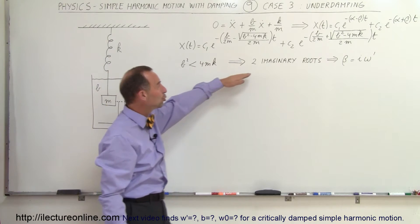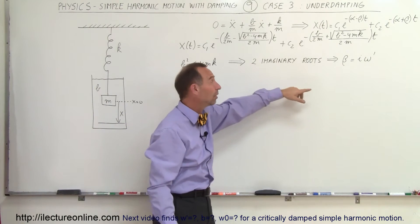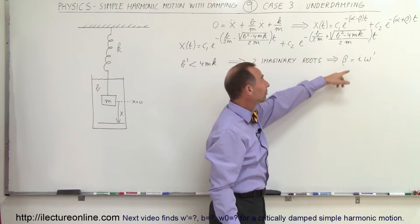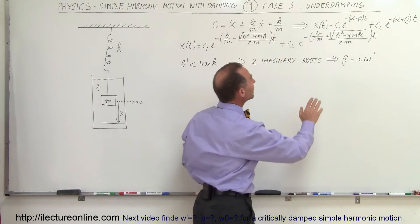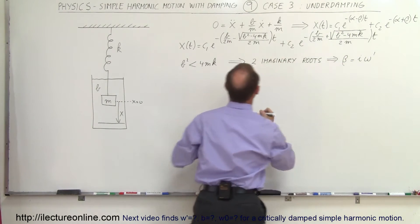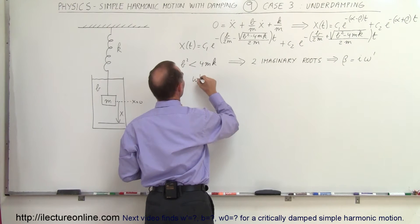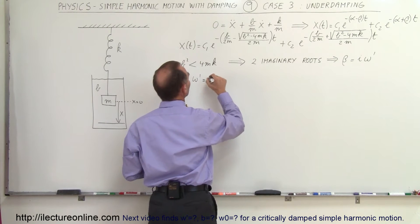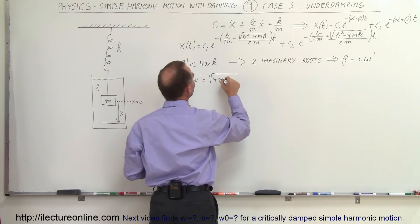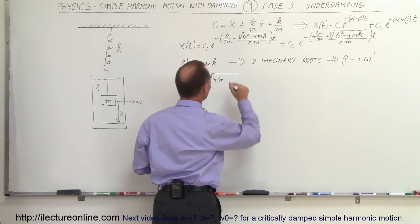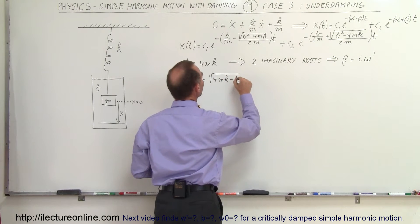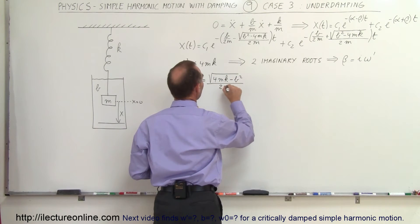So therefore we're going to have two imaginary roots, and so beta is now going to be I times omega prime. Omega prime is now going to be the imaginary solution here. So in other words, omega prime is now going to be equal to the square root of 4mk minus B squared, all divided by 2m.